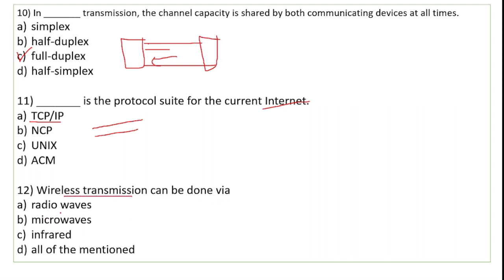Wireless transmission can be done via — radio waves wireless hai, microwave wireless hai, infrared bhi wireless hai. So the correct answer is all of the mentioned.